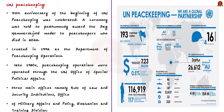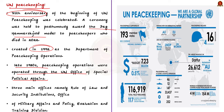Our next topic is United Nations Peacekeeping. Recently the 75th anniversary of UN Peacekeeping was celebrated, mainly to posthumously award the Hammarskjöld Medal to peacekeepers who died in 2022. UN Peacekeeping was formally created in 1992 as the Department of Peacekeeping Operations. It traces its roots to 1948 with the creation of the first UN peacekeeping operations. Up to the late 1980s, peacekeeping operations were operated through the UN Office of Special Political Affairs. It is dedicated to assisting member states and the Secretary General in maintaining international peace and security. India is the third largest troop contributor with around 7,000 personnel deployed in 8 out of 13 active missions, and the first country to deploy an all-women contingent in 2017.